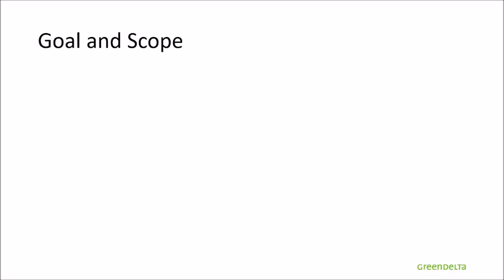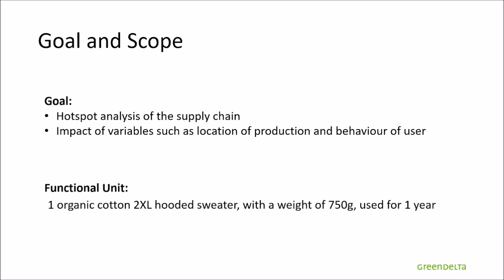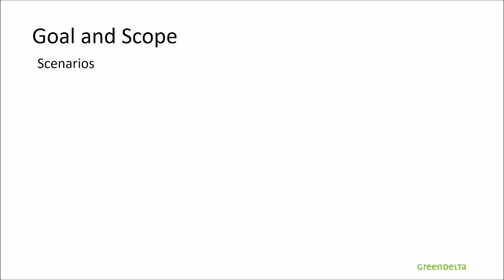There are mostly two applications for this study. The first one is to carry a hotspot analysis of the supply chain — in other terms, to find the most contributing elements to the total results. The second application is to evaluate how these impacts vary depending on the location of production and the behavior of the user. The functional unit we chose for this LCA is one organic cotton 2XL hooded sweater, which corresponds to a weight of 750 grams and which is used for a year.